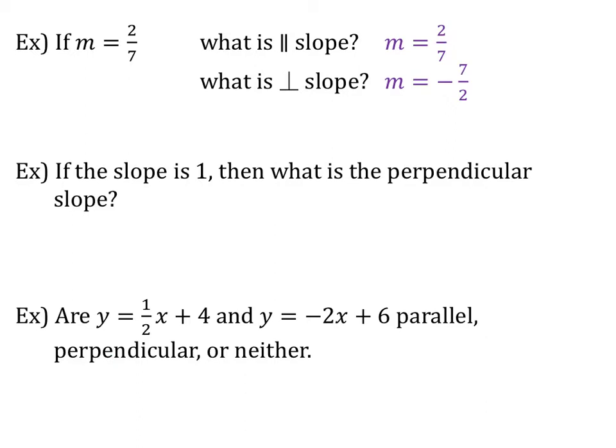Our perpendicular slope is going to be the opposite reciprocal, so I'm going to flip my fraction and change the sign. So my perpendicular slope will be negative 7 over 2.